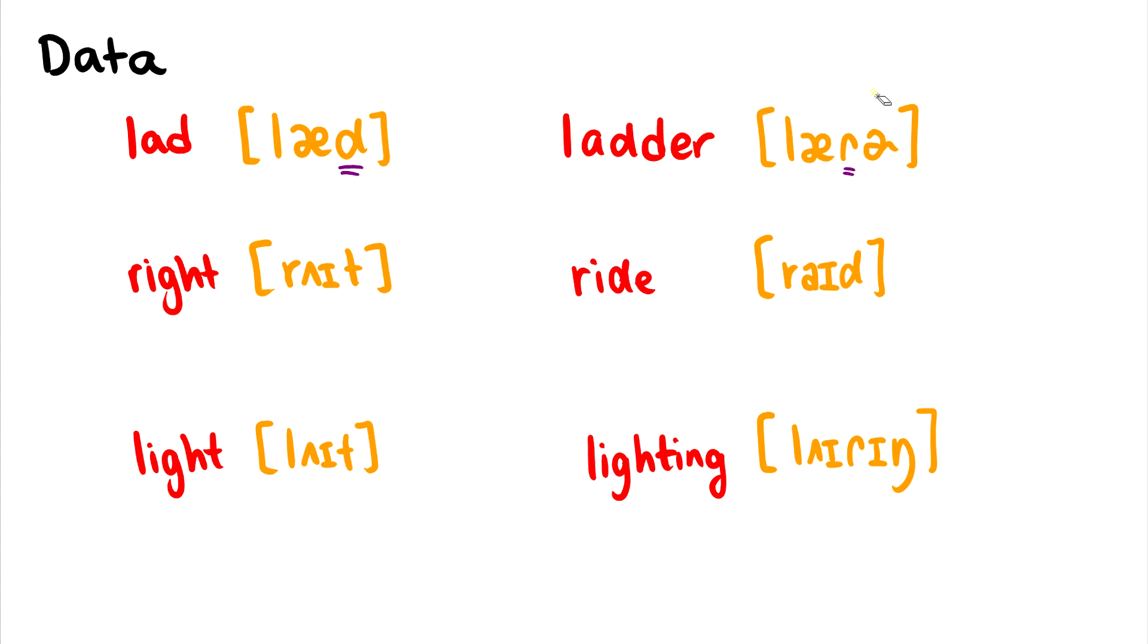Now the difference between right and ride. We can hear the vowel difference because I am a Canadian speaker. Right, this is raised because this is a voiceless consonant, while ride is not raised because this is a voiced consonant.